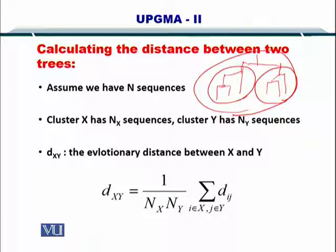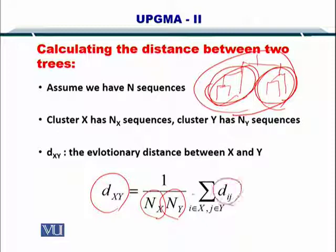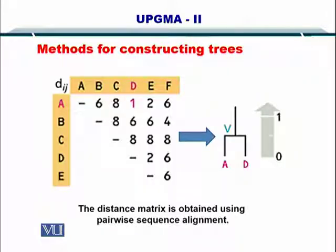To combine the two clusters, you can use the simple formula. You calculate the number of sequences in X and Y, take the reciprocal, and multiply it by the sum of the distances between I and J. So we continue with our example now. This was the distance matrix that you obtained from the pairwise sequence alignment.